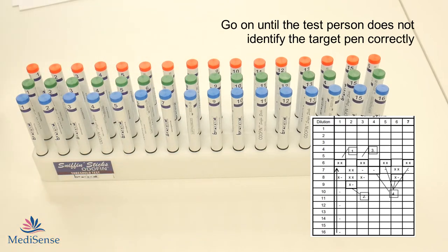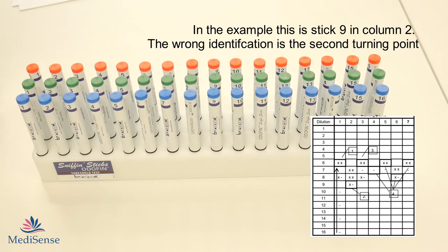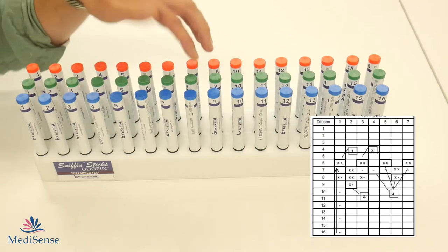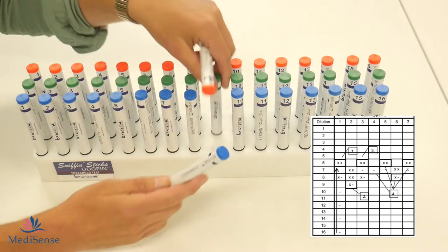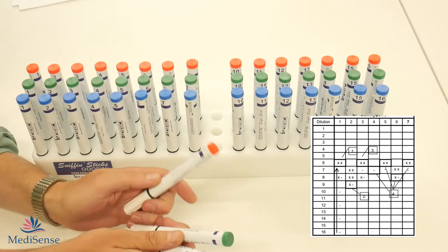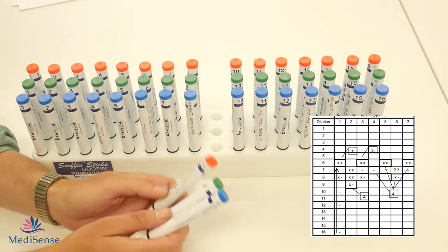You will continue until the test person does not identify the pen correctly. In the example you can see that was the pen sticks with number 9. The first time the pens were identified correctly and the second time they were not.